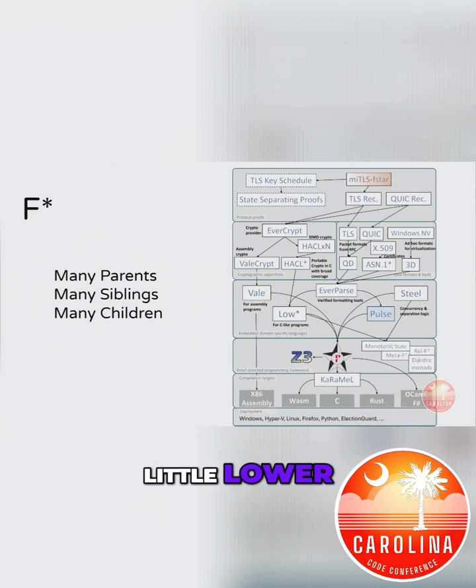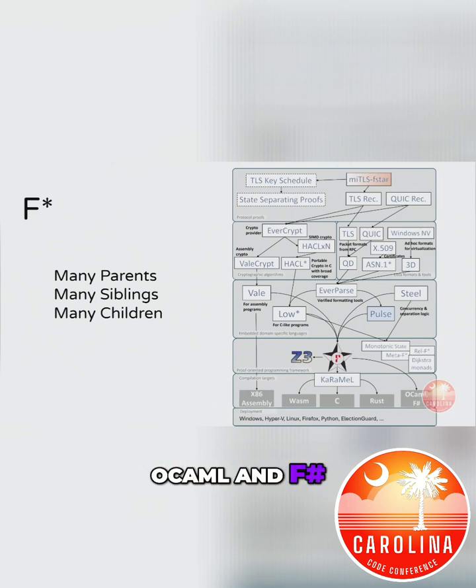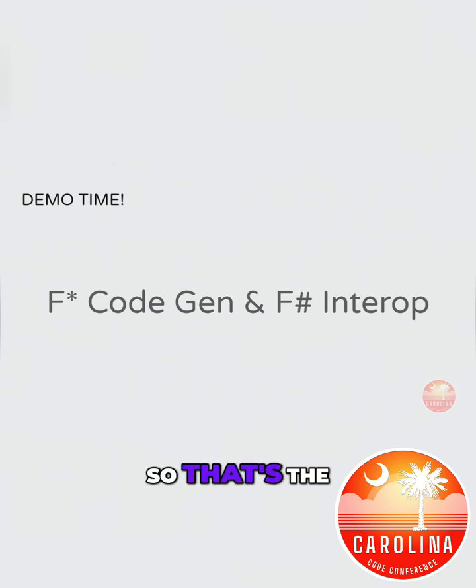Down in the lower right-hand corner is what we care about: OCaml and F-sharp. That's the third demo, which is the one people are really going to care about — seeing what the deal is between F-star and F-sharp.